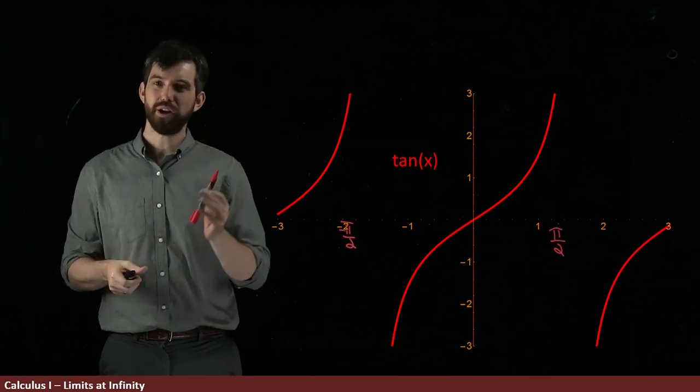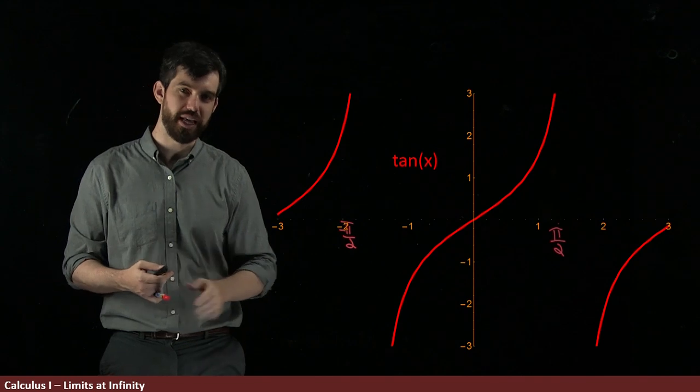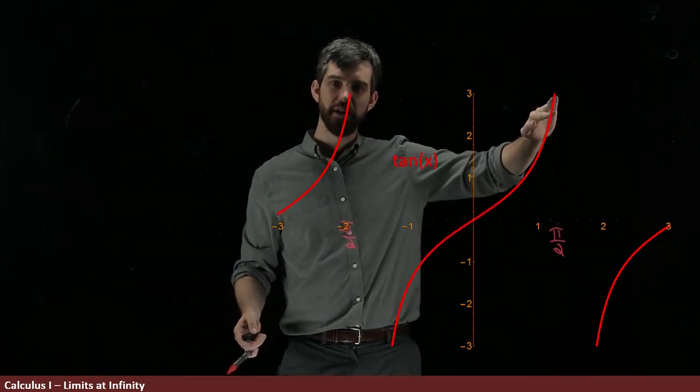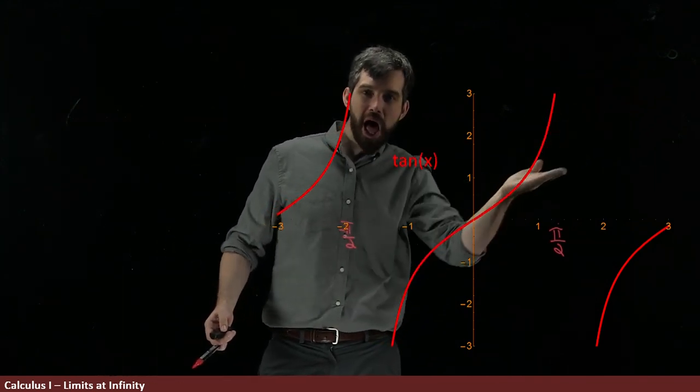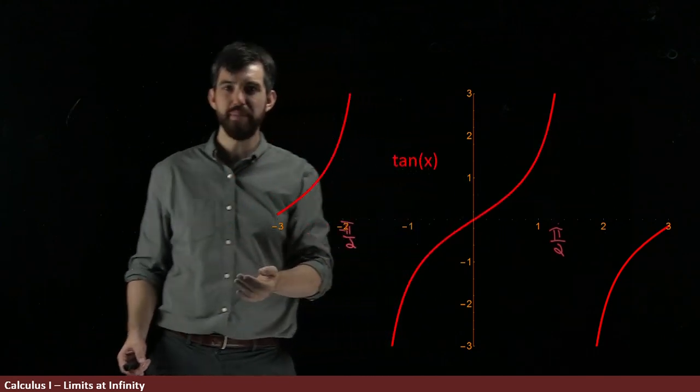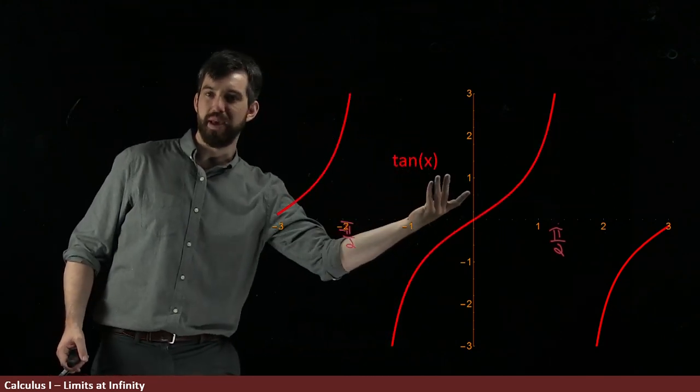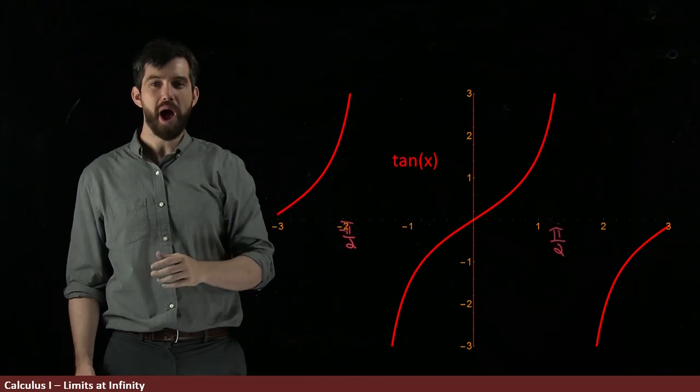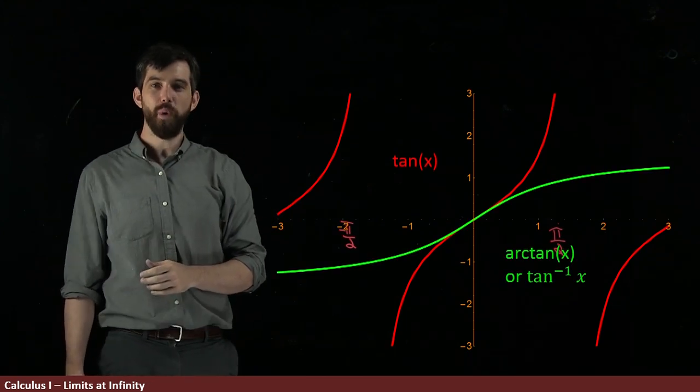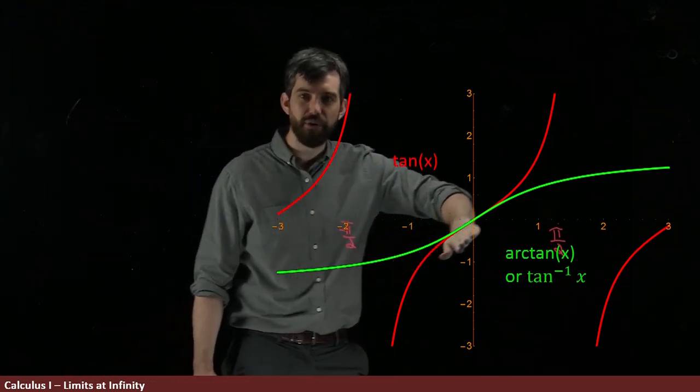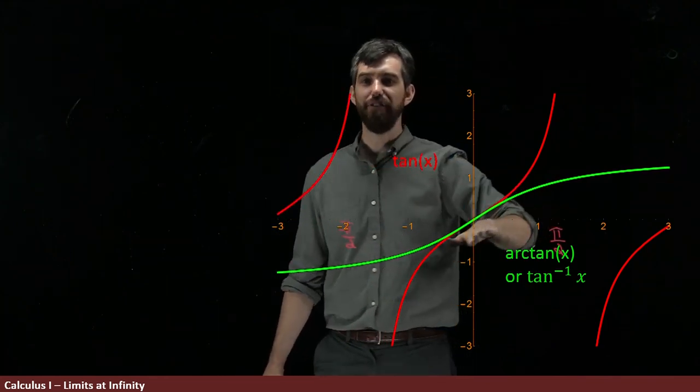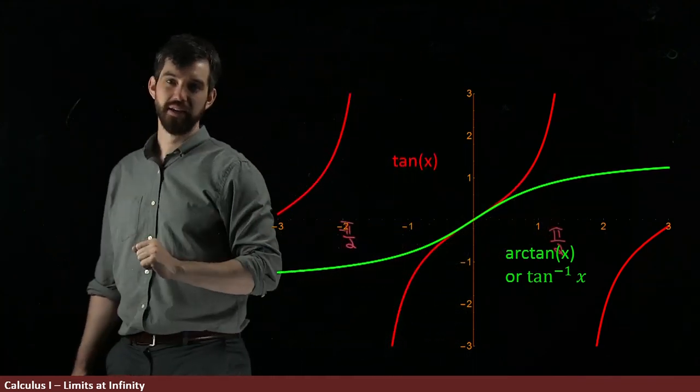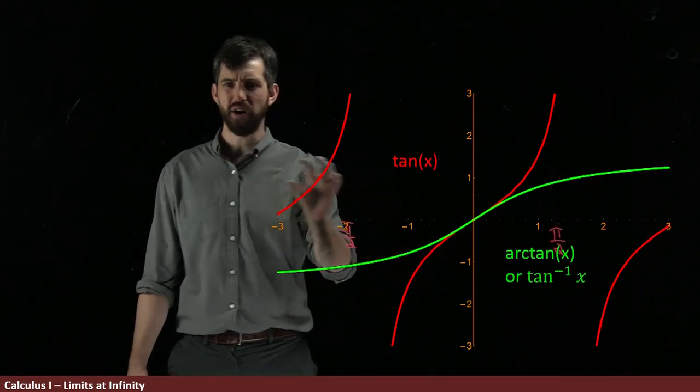So this is what the graph of arctangent looks like. We've got this graph of tangent. We have the line y equals x that flows through here. And I want you to imagine that I flip this picture around the line y equals x. And so then what I get is this graph here. That is my graph of arctangent of x. Sometimes I write it out in words, arctan of x.